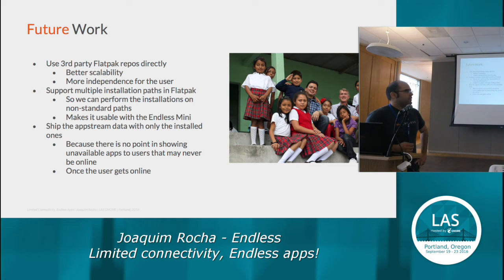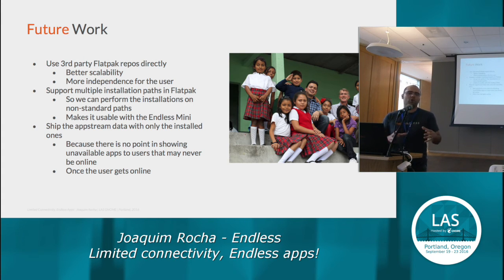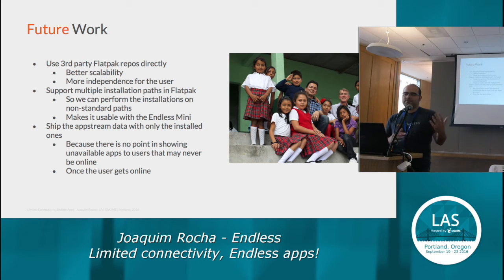At Endless we install everything in the system because we want every user of a computer to have access. The thing is we also have hardware that doesn't have a lot of space in the system partition, but does have an SD card. That's why we need other installation paths for the user to install content. The third future item is somewhat complicated: currently when you build applications you get AppStream data with all the applications available in your repository. When you buy our computer, go to the mountains without internet, open GNOME software and see a bunch of applications — most will be installed, but some won't. Some users will very likely never get internet, so they shouldn't see content saying 'look at all these nice games you cannot ever install.'